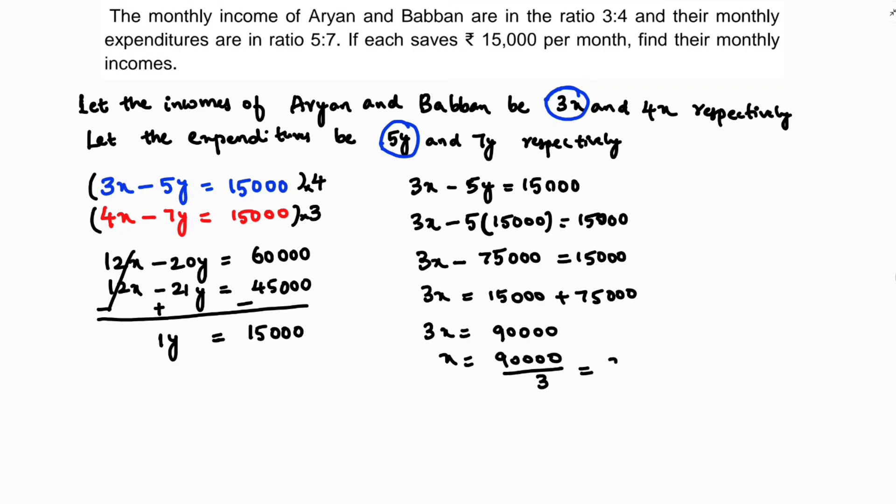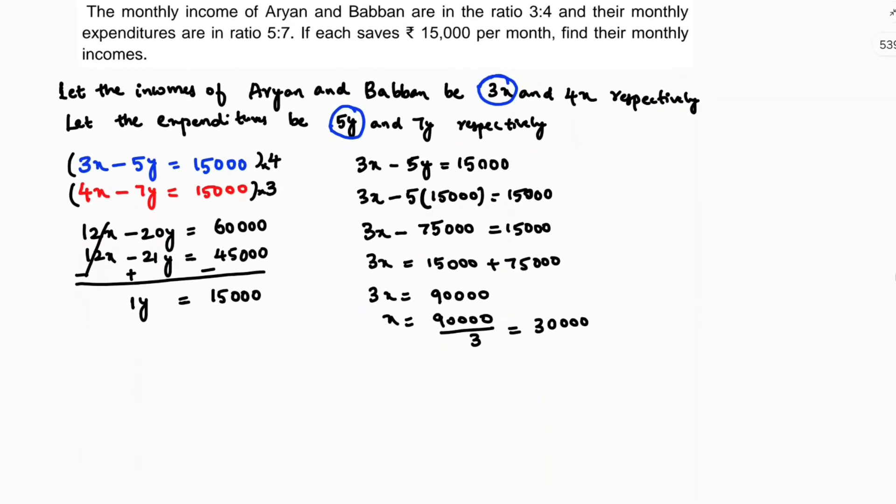We need to find the incomes of Aryan and Babban. Aryan's income is 3 times 30,000, so Aryan's income is 90,000 rupees.